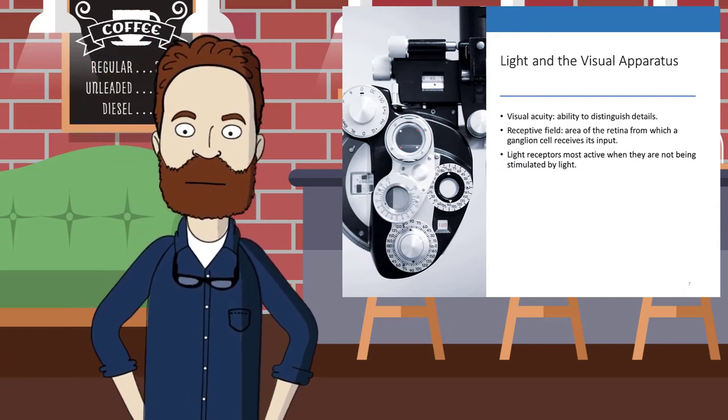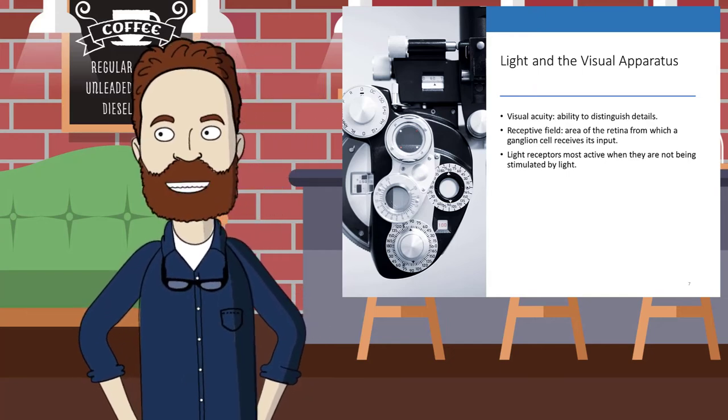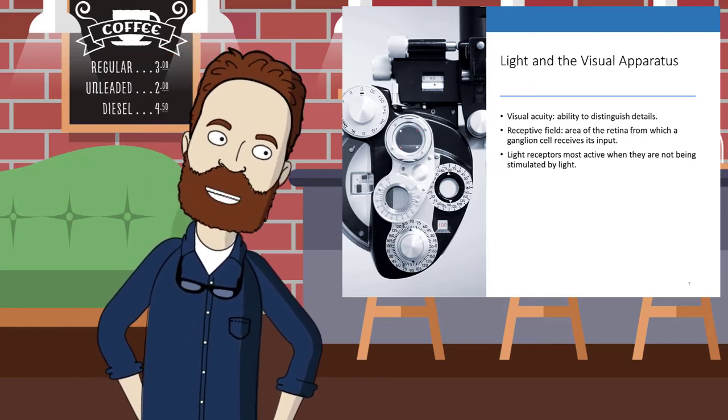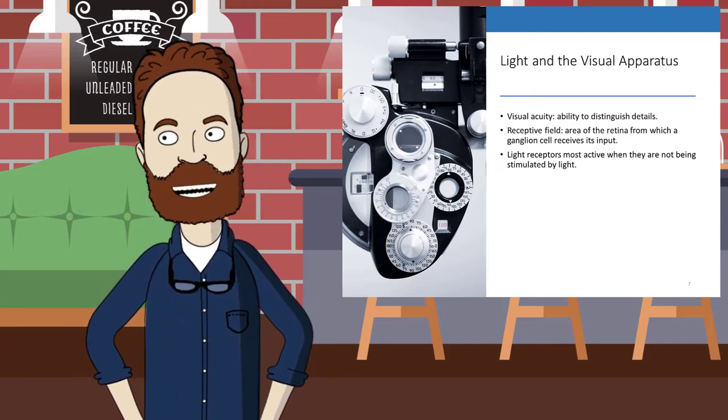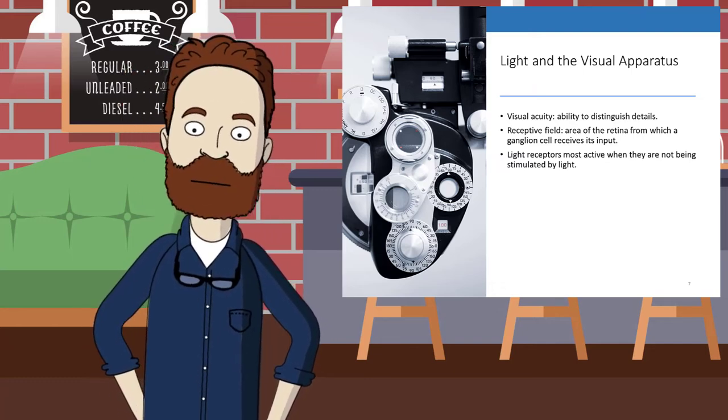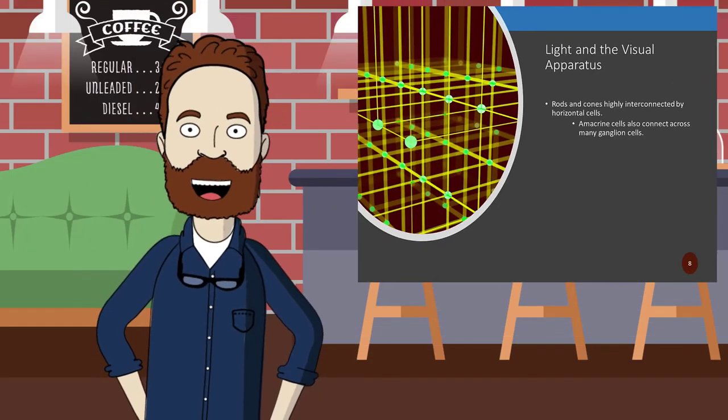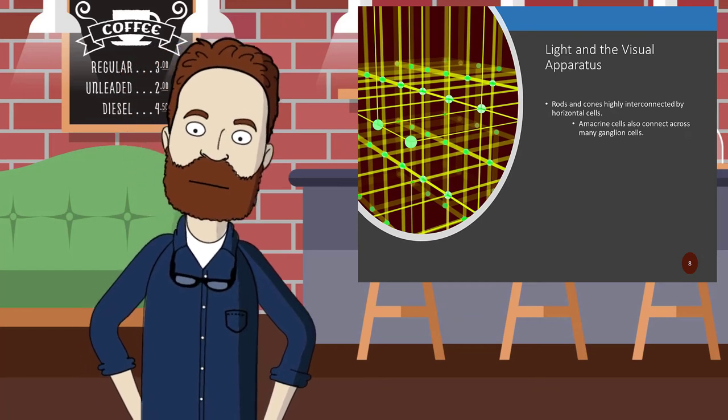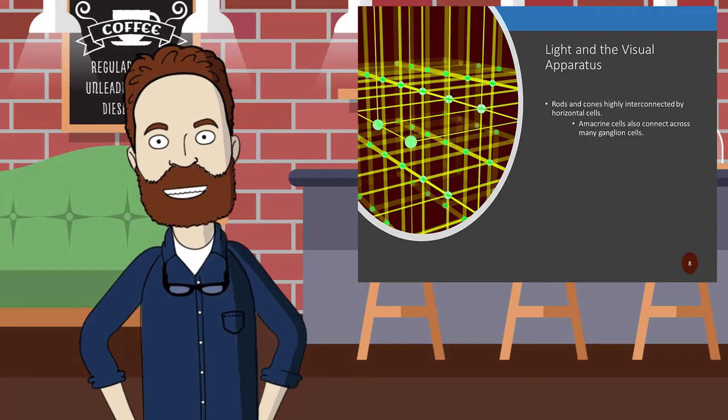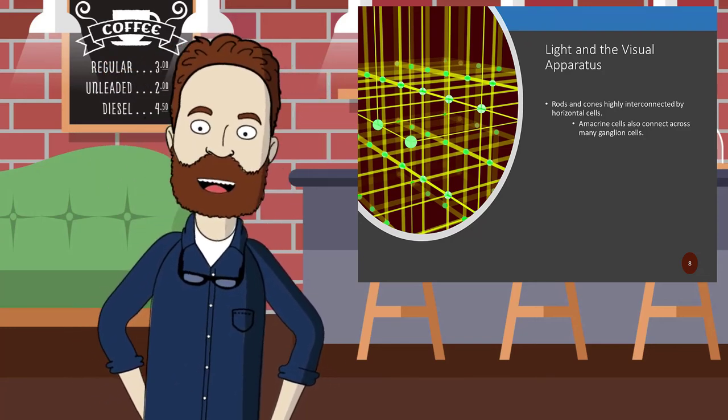The receptor inhibits activity in bipolar cells with a continuous flow of glutamate. The chemical response that occurs when light strikes the photopigments closes the sodium and calcium channels, reducing the release of glutamate in proportion to the amount of light. The bipolar cells release more neurotransmitters, which increases the firing rate in ganglion cells. Rods and cones are highly interconnected by horizontal cells. Amacrine cells also connect across many ganglion cells.